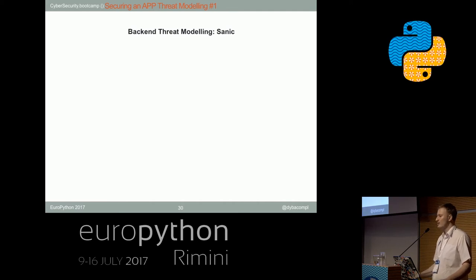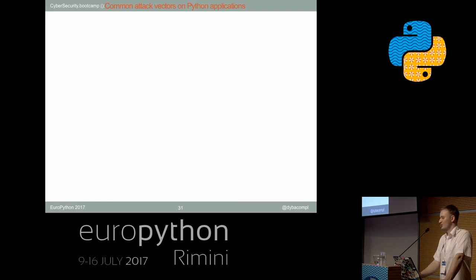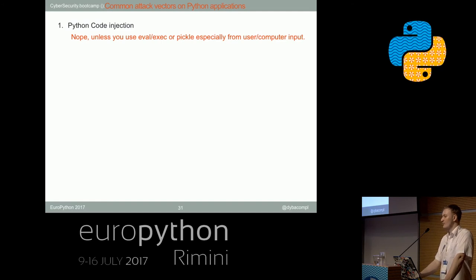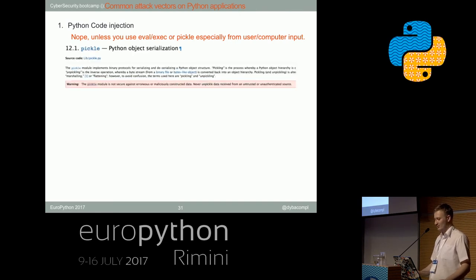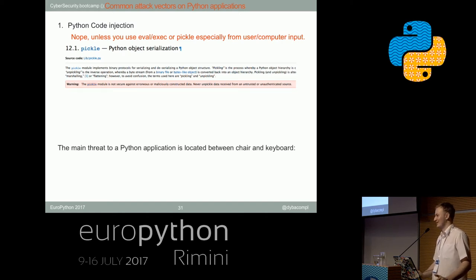Sanic is a Python web framework using AsyncIO and UV loop. What can go wrong there? There can be some Python code injection, but not really — unless you are using eval, exec, or pickle. With pickle it's quite obvious because even in the documentation it explicitly says not to use pickle with user input. Exec and eval are also not the best idea. For Python, the problem usually exists between the chair and the keyboard — the developer. So it's on your hands to make your application secure at the Python level.